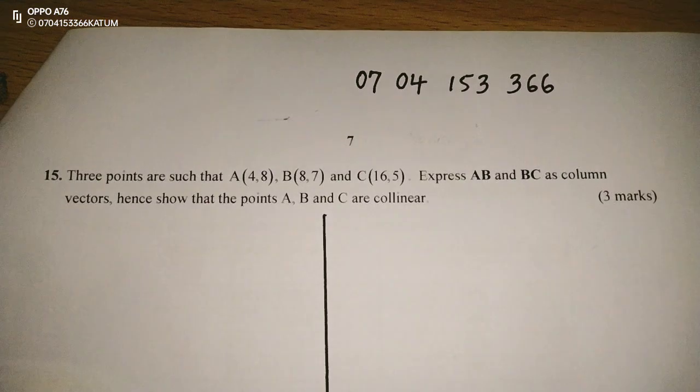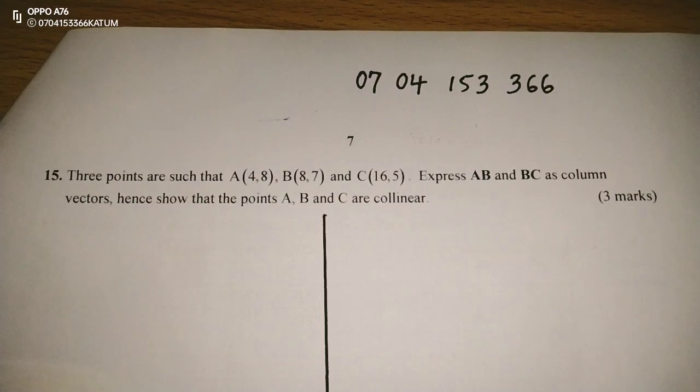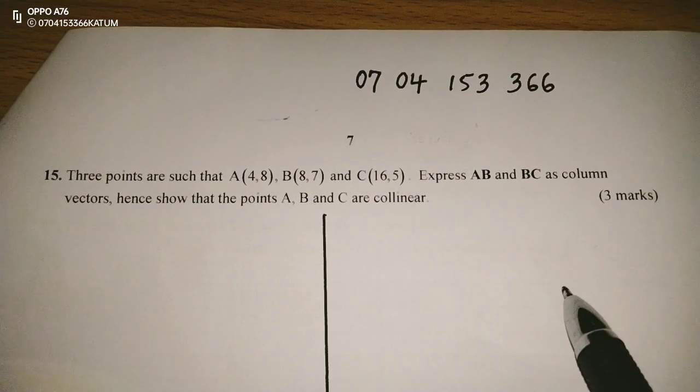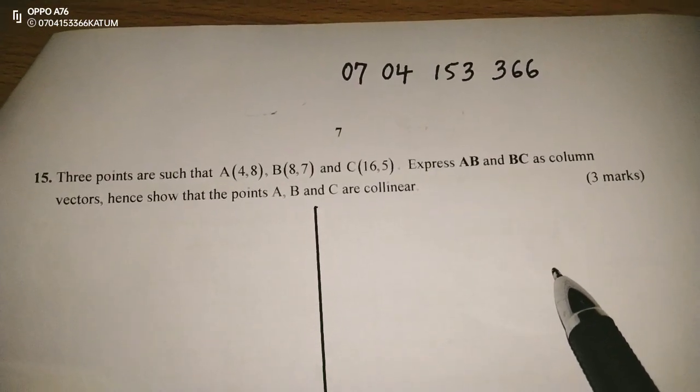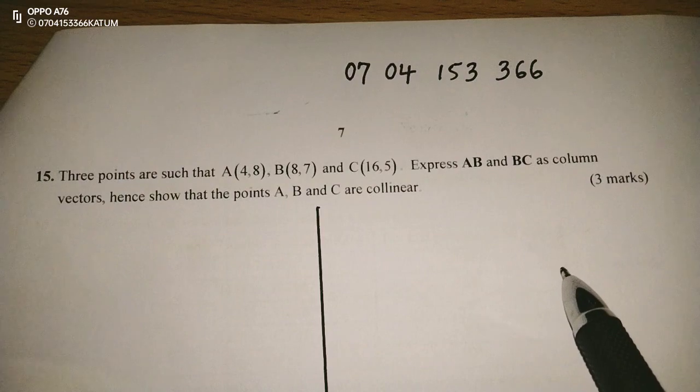So to show that points are collinear, we have to express two of their vectors as column vectors, then prove that such vectors are parallel.